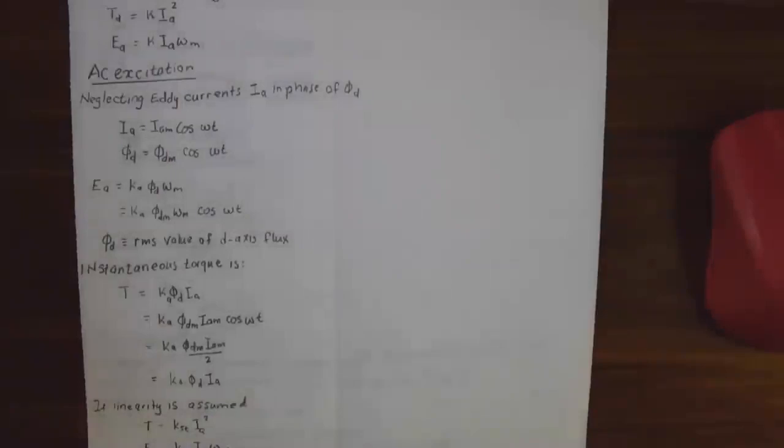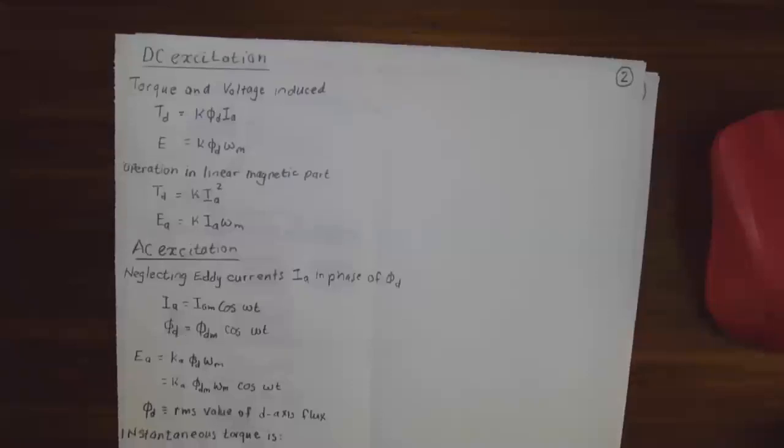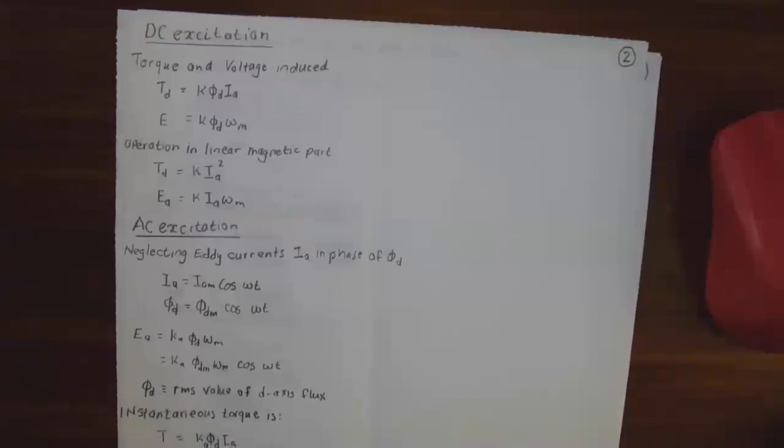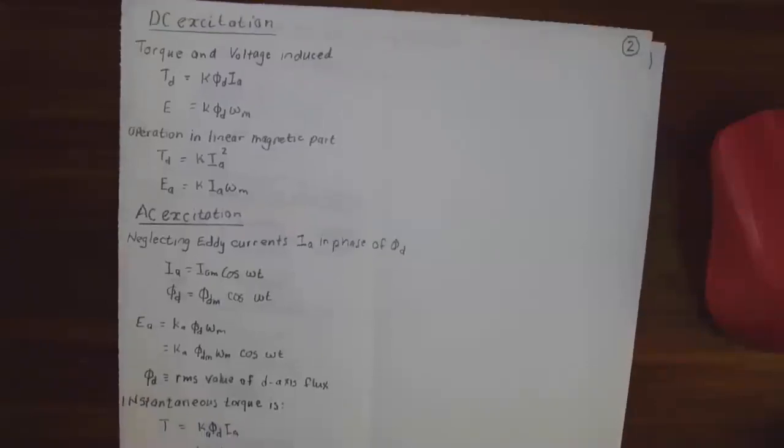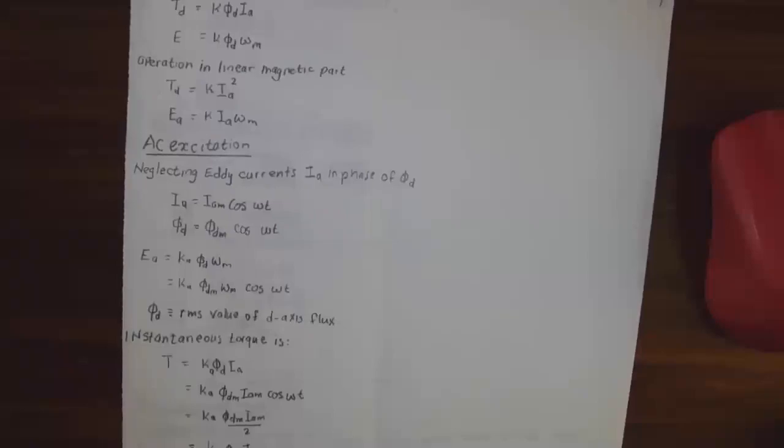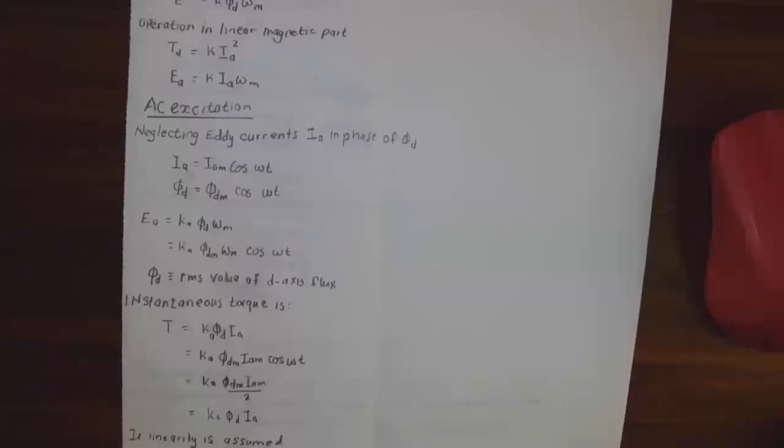Now if you look at DC excitation, the torque and voltage: induced voltage and developed torque is k phi d I_a, phi d is naturally your direct axis. E is k phi direct omega m. Now the operation in the linear magnetic part T_d is k I_a squared, E_a is k I_a omega m.